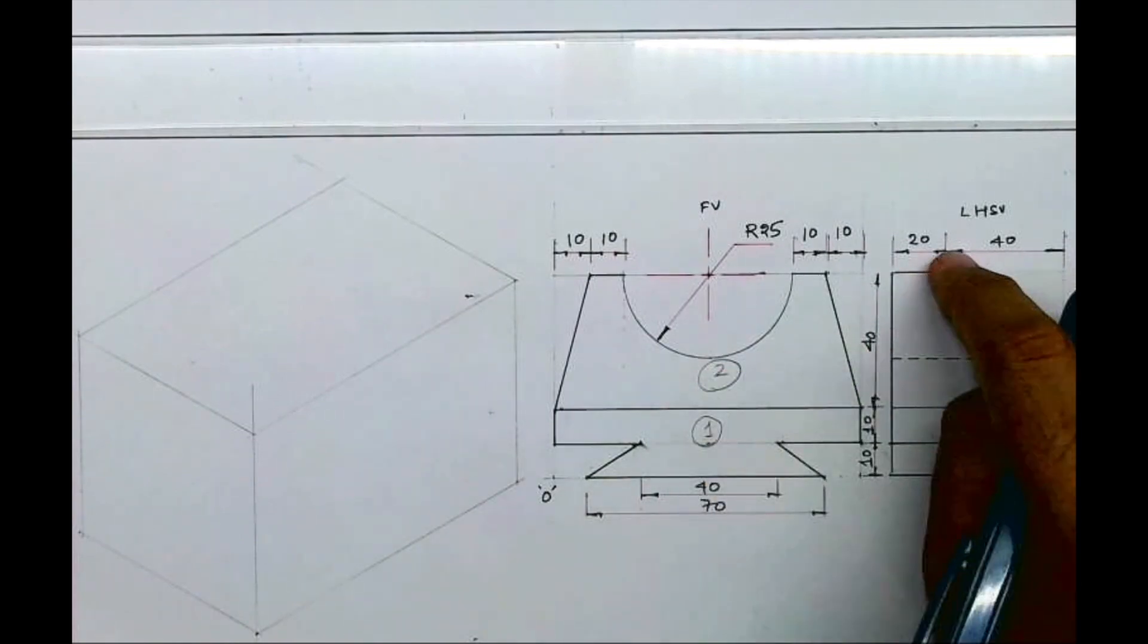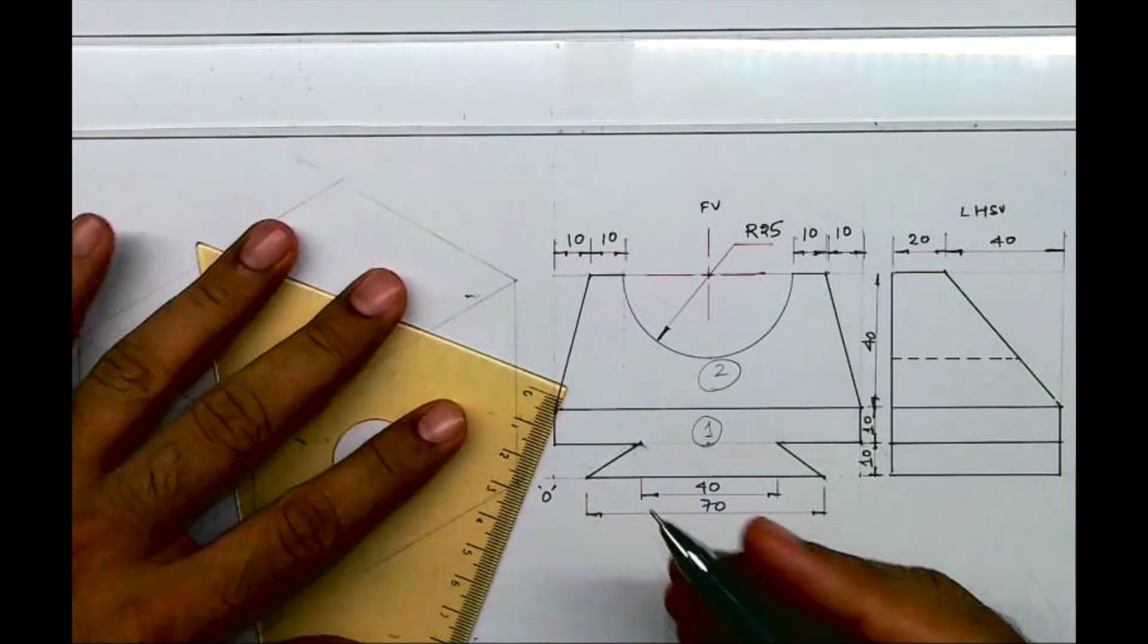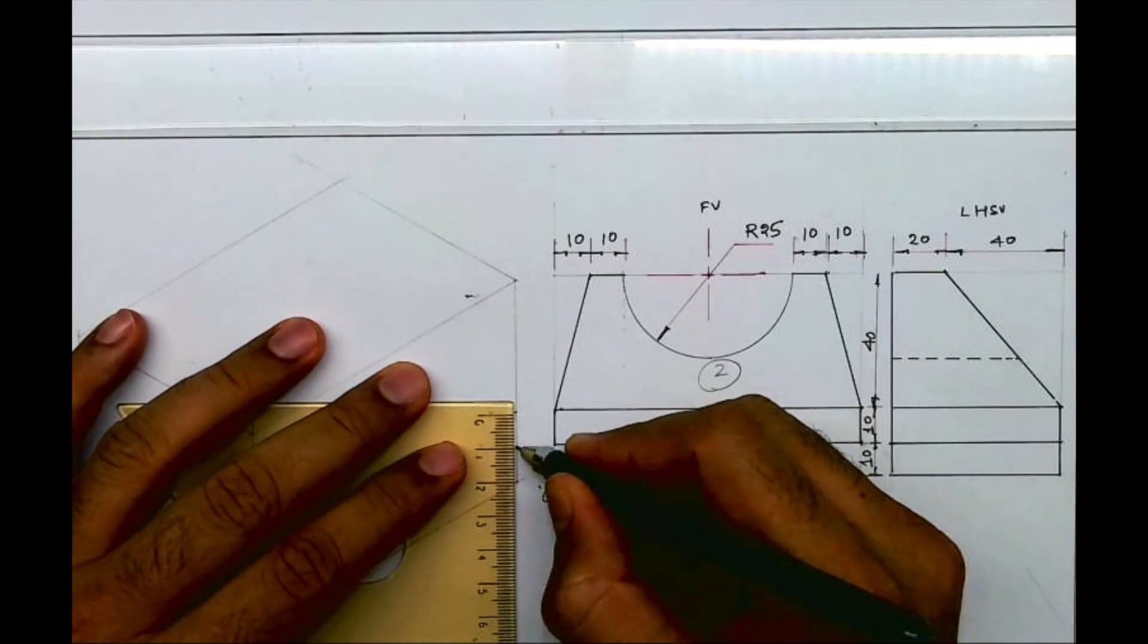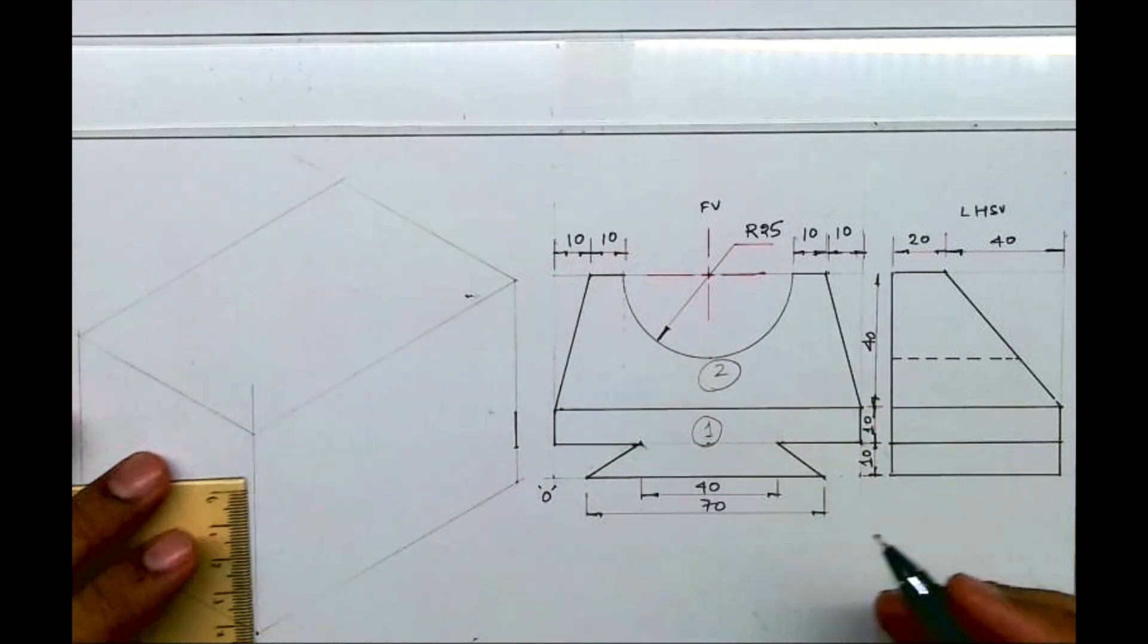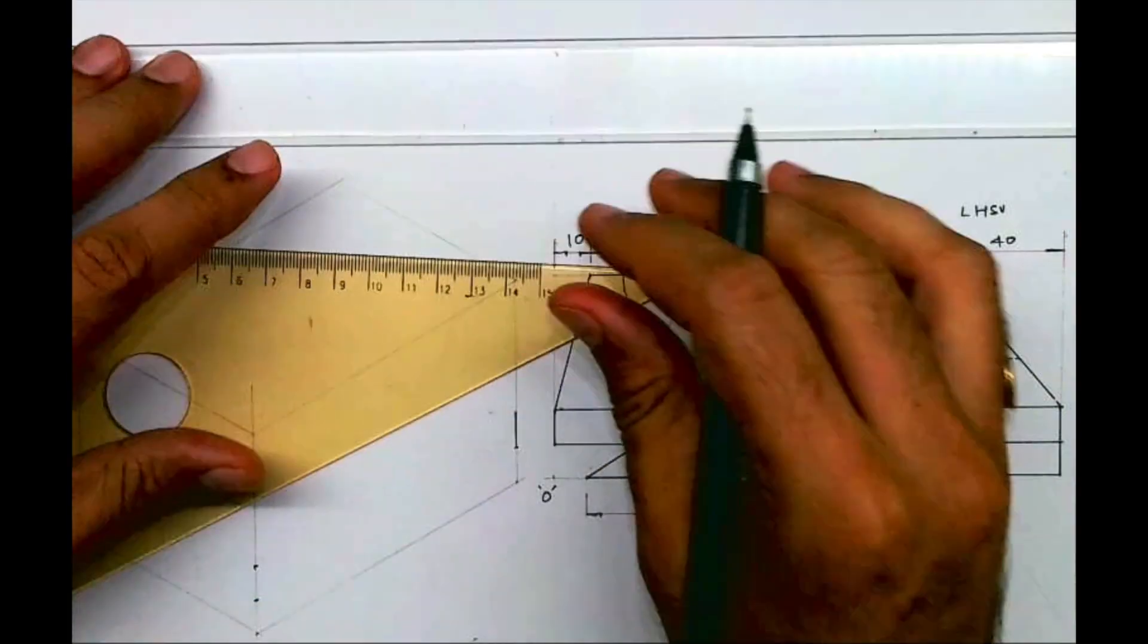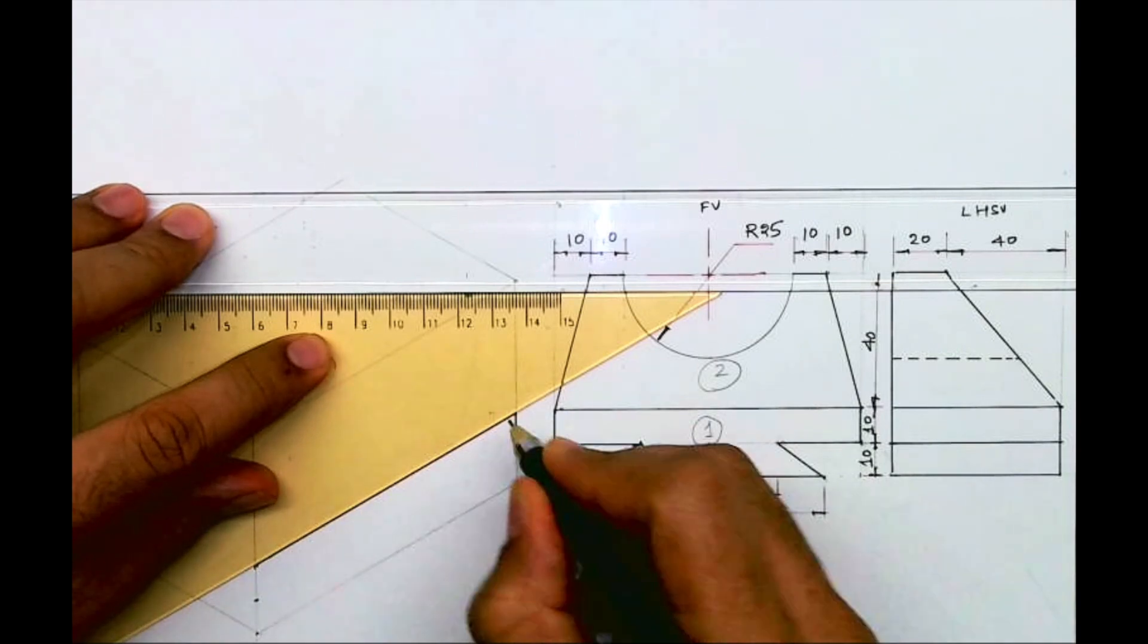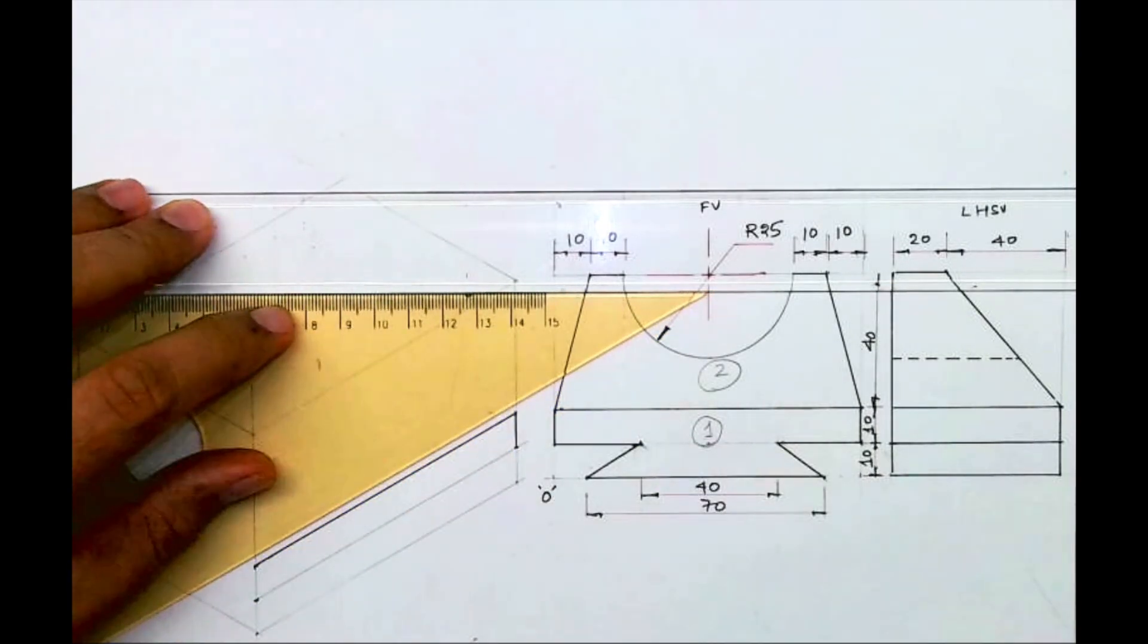I'll draw part one first and then part two. So first I will take 20 and mark 10 here, also mark 10 and 20. Then I'll draw this line. After that I'll draw one horizontal line.